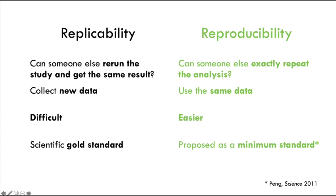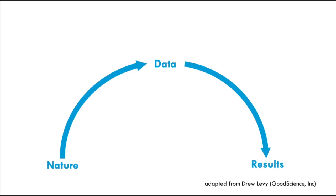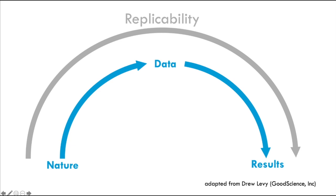As data analysis becomes more and more complex, reproducibility becomes more important and has been proposed as a minimum standard for judging the scientific validity of a study. It's becoming more common that academic journals request submission of your analysis code for peer review, especially for high-throughput kinds of studies. In very general terms, we collect some raw data from nature, use that data to get results, and draw general conclusions. Replicability means the entire process can be repeated.